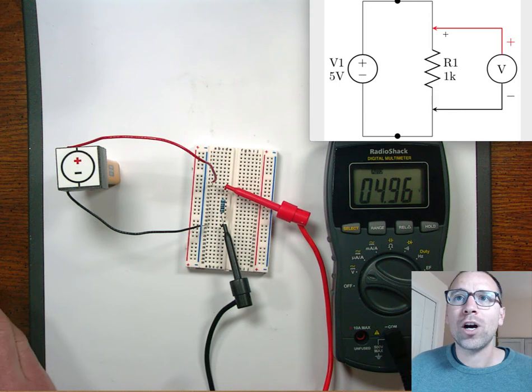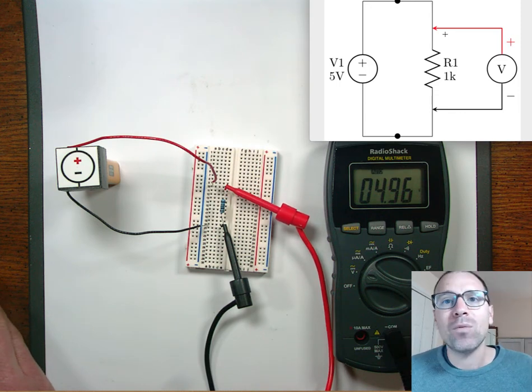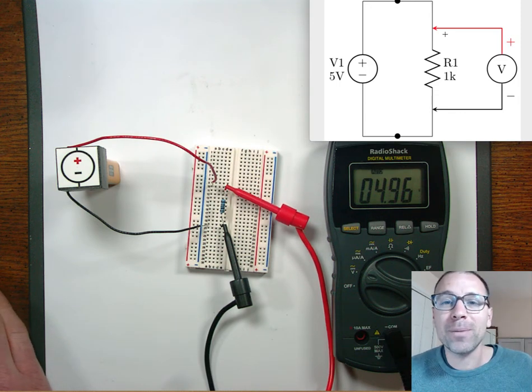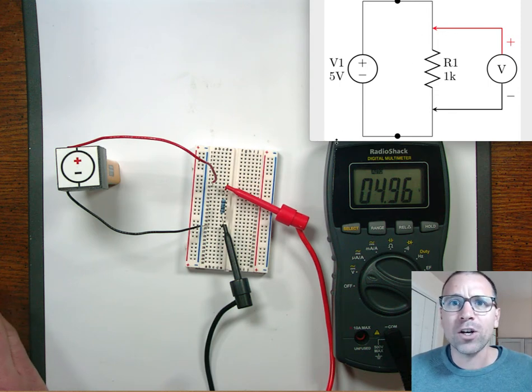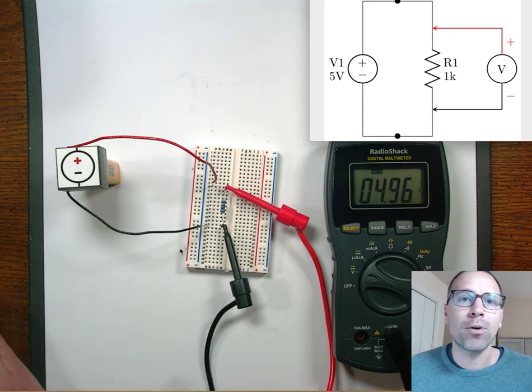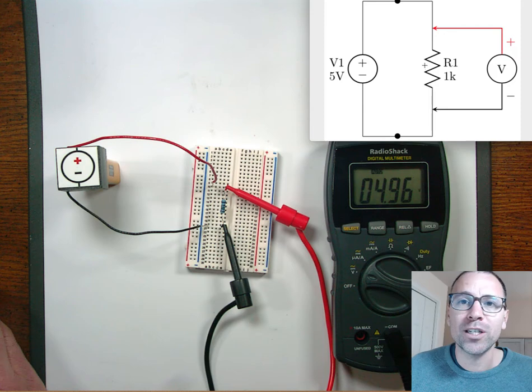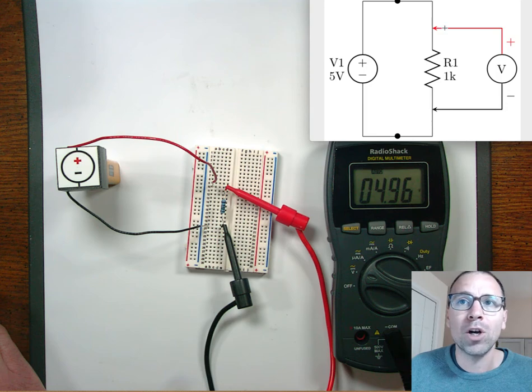This voltage drop is done in parallel. We're going to talk more about parallel elements and series elements in later videos. But note right here, what's happening is we're not breaking any connection in this particular circuit. All we're doing is parallel to this resistor, literally right next to it. We attach one lead of the multimeter above, one lead of the multimeter below, and then we measure the voltage drop in parallel to that resistor.